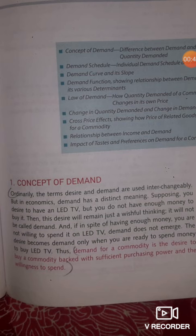Desire means just wishful thinking. For example, if I have a desire to buy an Audi car but I don't have enough money to purchase that car, that is only a desire because I don't have the money to buy it.